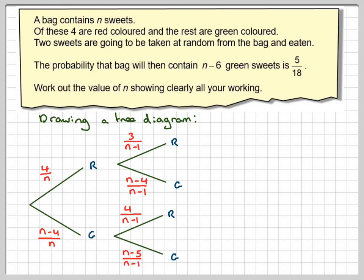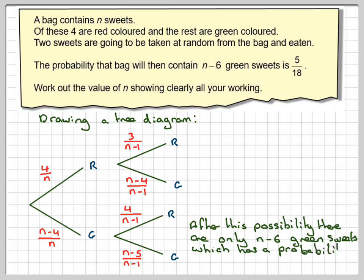Now this is one that we're interested in, because we're told the probability of the bag will then contain n minus 6 green sweets is 5/18. So if we do this selection here, we will only have n minus 6 green sweets left. So these two probabilities multiplied together must be equal to 5/18.